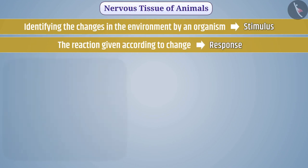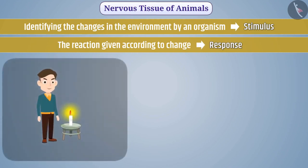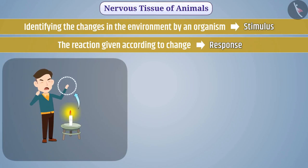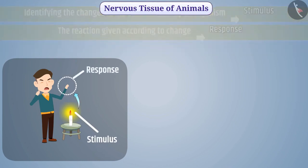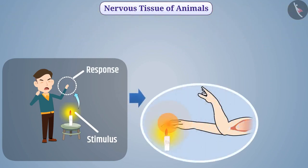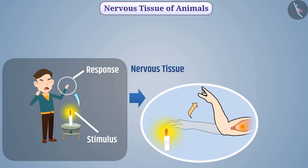For example, if we inadvertently touch a hot object, the touched part of the body is immediately taken back. Here, the hot nature of the object is the stimulus and taking back the part of the body is the response. Information from skin cells reaches the muscle cells of the arm and movement takes place. This work is performed with the help of nervous tissue.